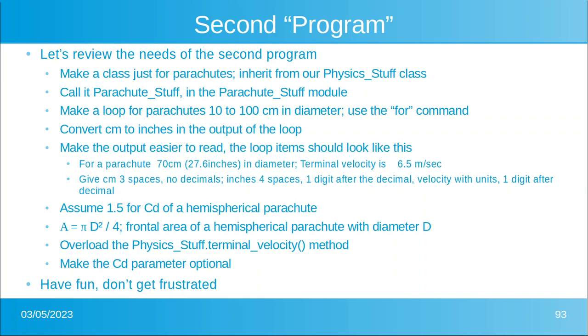We want to make the output easier to read, so I'll give you an example there of how to do it. We're going to assume 1.5 for the coefficient of drag. The area of a circle is there, and then we want to overload the Physics_Stuff.terminal_velocity method and we want to make the cd parameter optional.